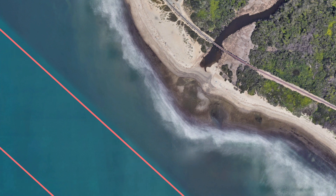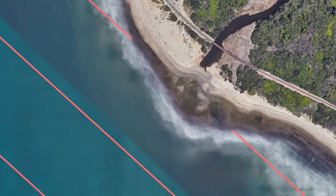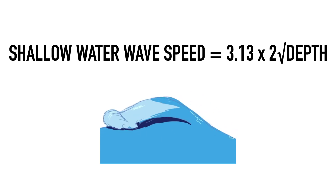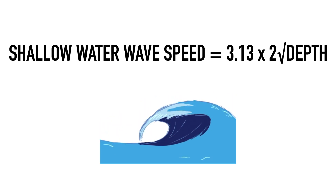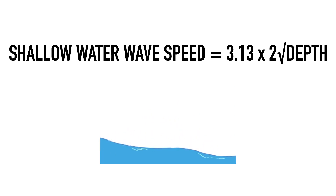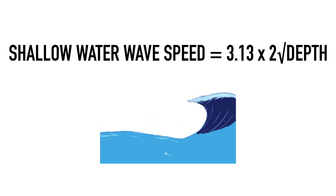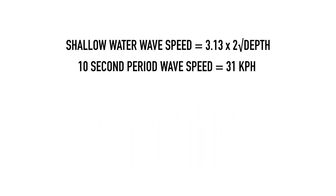The speed of a shallow water wave is entirely dependent on depth, not the size of the wave, which means that once a group of waves with the same swell period reach a particular depth they are all traveling at the same speed, locking in the order and frequency of waves within a set. To calculate the shallow water wave speed we multiply 3.13 by the square root of the depth. Therefore once our 10-second period waves reach the 8-meter depth and become shallow water waves, they're traveling at 31 kilometers per hour.